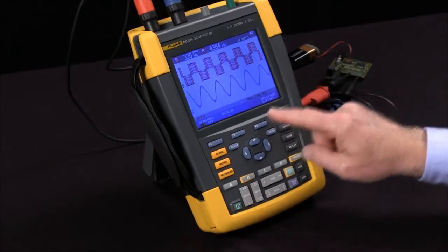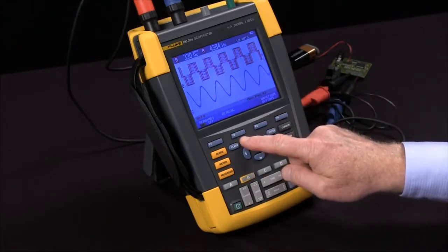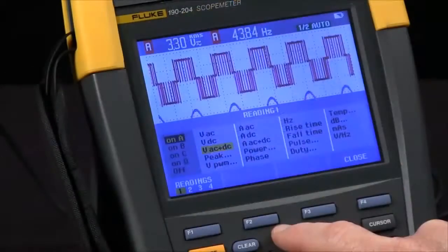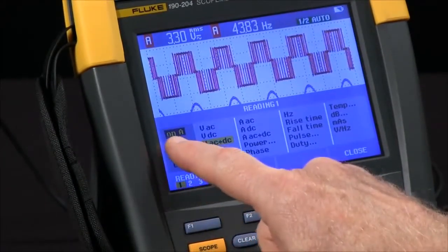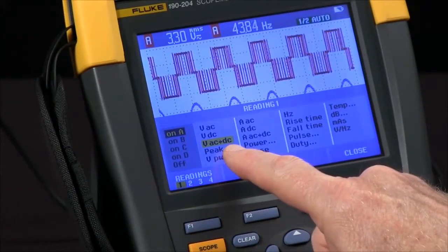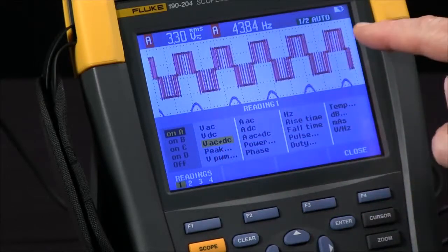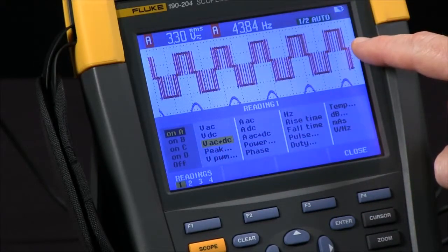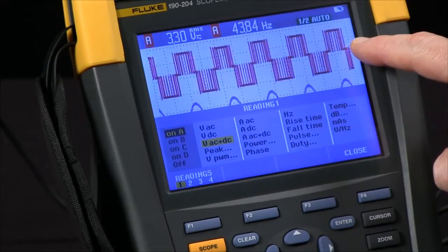To modify those, I hit the F2 button for readings. Right now reading one is on channel A, reading volts AC and DC. I want to measure VPWM for this since it's a variable frequency drive signal, pulse width modulation.